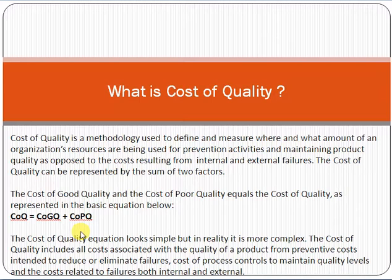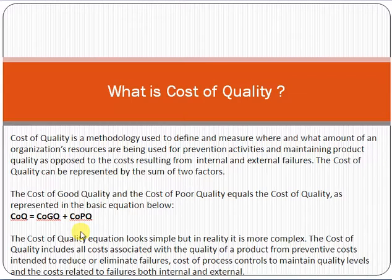If you are studying project management, I'm sure you've heard about the triple constraint — scope, time, and cost. These three factors are interdependent on each other. If there is any impact on scope, there must be an impact on cost and time. If there is any change in cost, there must be an impact on scope and time as well. So a change in any one factor causes a change in the other two.